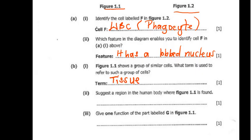And then (b)(ii) says, suggest a region in the human body where figure 1.1 is found. So there are a lot of parts where this cell is found, but one of them that I can mention is the trachea. In the trachea.